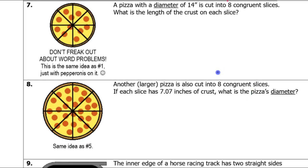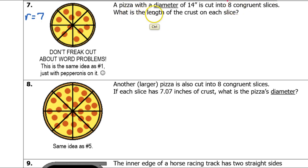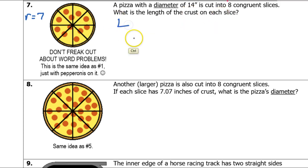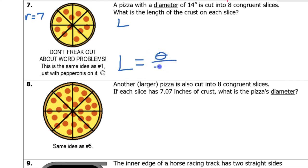Let's see what's up with number 7. A pizza with a diameter of 14 inches. Right away, let's just know that if the diameter is 14, that means the radius is 7. It's cut into 8 congruent slices. What is the length of the crust on each slice? The length of the crust — that's like the L of our formula. The formula goes like this: the arc length is equal to some fraction times the circumference.